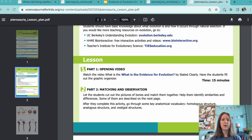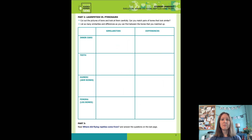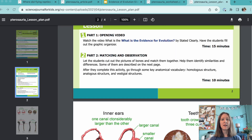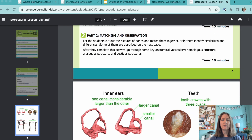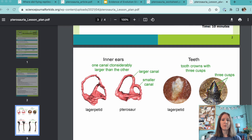The second part is a hands-on matching activity. Students will cut out pictures of bones from two different organisms. They need to match them and use the chart to determine the similarities and differences between the bones. The lesson also has some suggestions for discussion after the students are done with the activity.